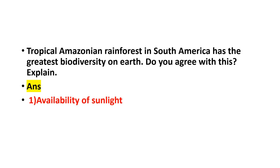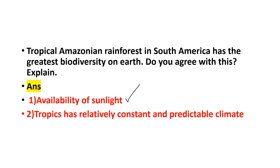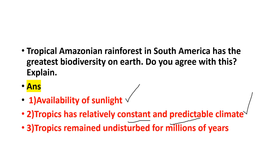Why is diversity greater in tropical regions? The first reason is the availability of sunlight, which supports plants and animals through food diversity. The second reason is that the climate is constant and predictable — seasonal variation is minimal, allowing all kinds of life to thrive. The third reason is that tropical regions have remained undisturbed for millions of years.